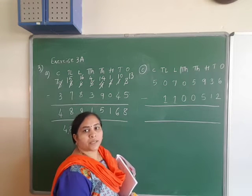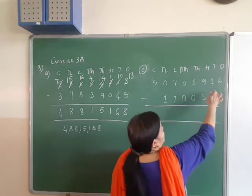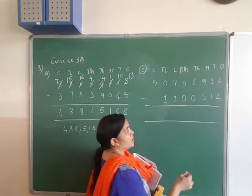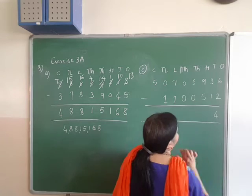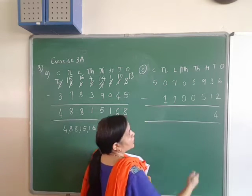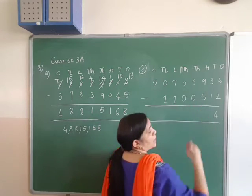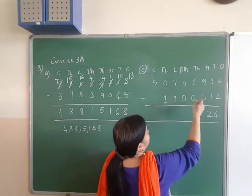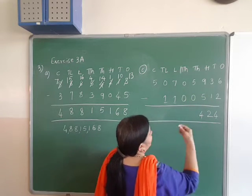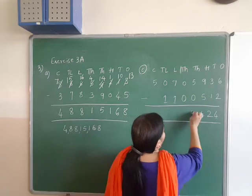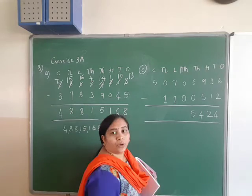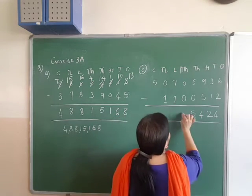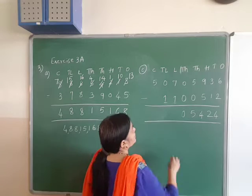Now to subtract these two numbers: 6 minus 2 is 4, no carry over because this is a bigger number. 3 minus 1 is 2. 9 minus 5 is 4. All are bigger numbers. 5 minus 0 is 5. 0 minus 0 is 0.